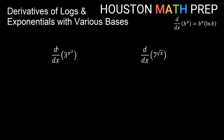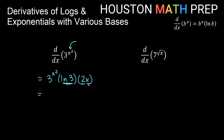Now a bit more chain rule to do. We have the derivative with respect to x of 3 to the x squared. The derivative of an exponential is itself, so we say 3 to the x squared times ln of the base — times ln of 3 in this case. But don't forget your chain rule: multiply by the derivative of the inside. The derivative of x squared is 2x. We can get all the numbers together — 2 times ln 3 is the constant part — giving us 2 ln(3) times x times 3 to the x squared.